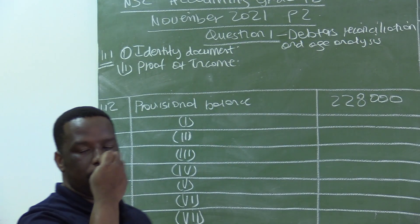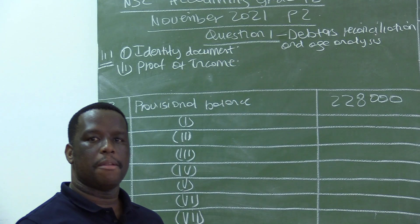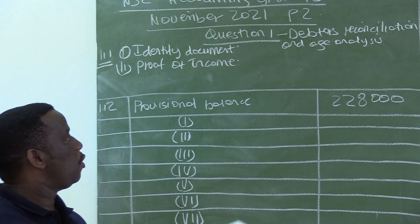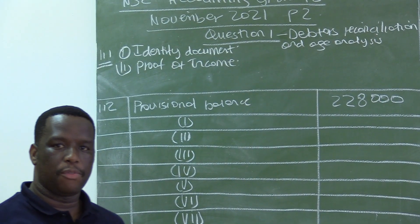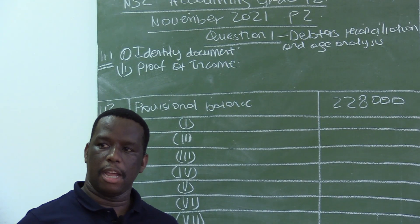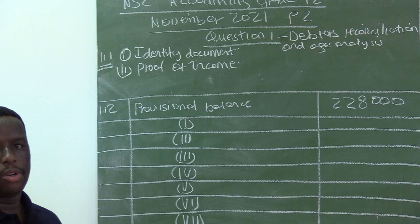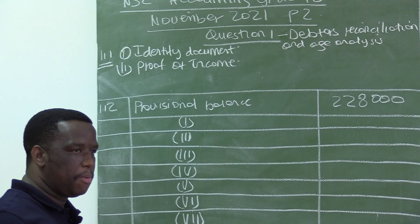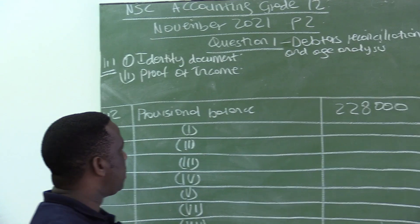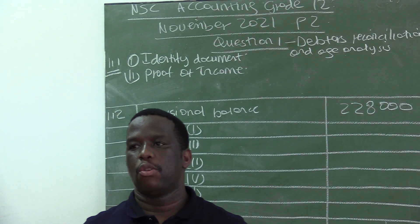Proof of income — maybe you can give us your salary advice, or go to the bank and give us a three-month bank statement so we can see that you do have an income. That will also assist us to create a credit limit for you, because you cannot give a person who is earning two thousand rands a month a 100,000 credit limit, as that person will not afford to pay it back. So it's very important that these documents must be provided.